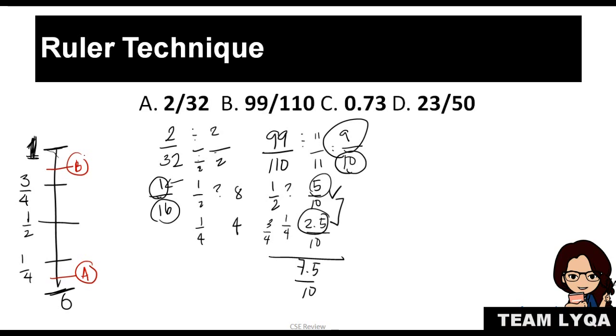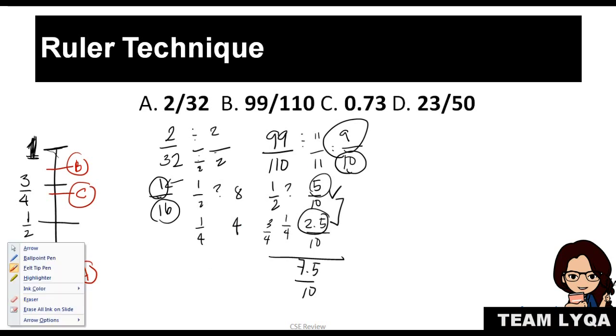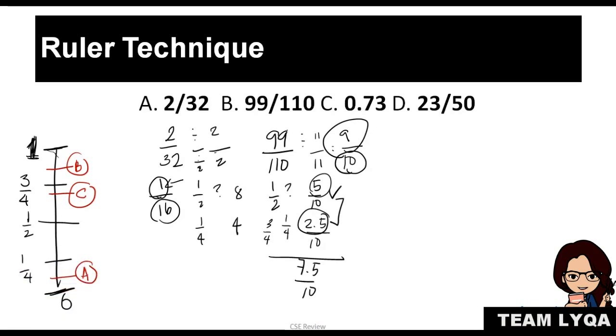If I see 9 over 10, the 9 is very close to 10. Only one away, right? Usually when it's like that, it's most likely up here above 3 fourths. The 0.73, we know this is 0.75 for 3 fourths. And 0.73 is just a little bit lower than 0.75. I can place it here. The 23 over 50, we can also solve for that. I'll show you, then I'm going to explain the mental method.